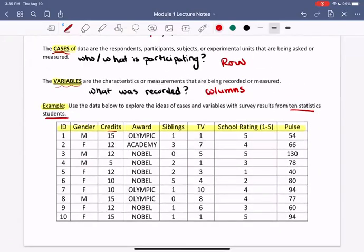There's a lot of information being collected. We have ID, we have gender, we have credits, we have award, the number of siblings, number of TV hours watched, school rating, I guess how they rank their school on one to five, and their pulse. So we have one, two, three, four, five, six, seven, eight different variables being collected.